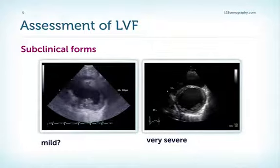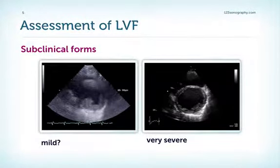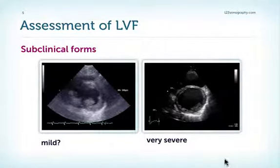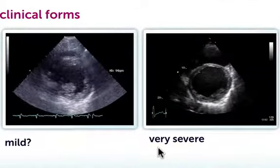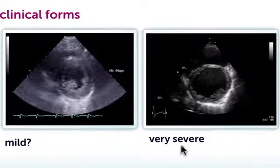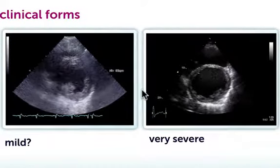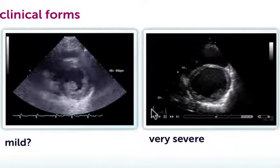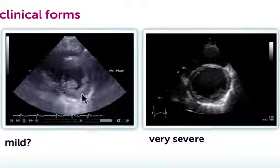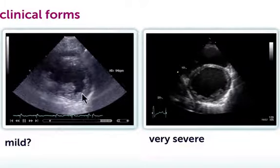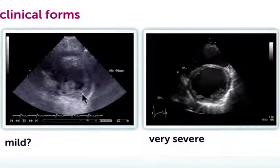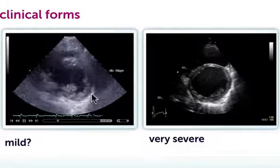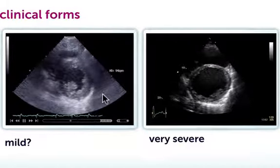When you look at left ventricular function in patients with dilated cardiomyopathy, you will find extremes. You can see the patient here on the right who has very severely reduced left ventricular function — that patient died only months after recording this echocardiogram. Or you can have patients with only subtle changes, such as this patient on the left who had a mildly dilated left ventricle and only mild reduction in left ventricular function.